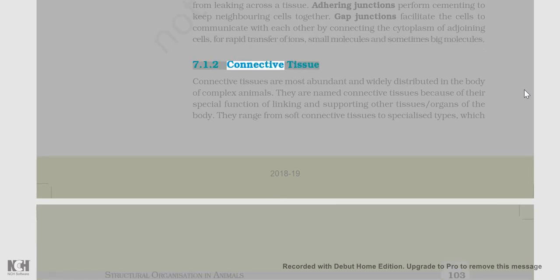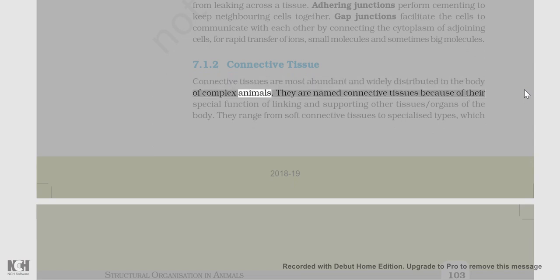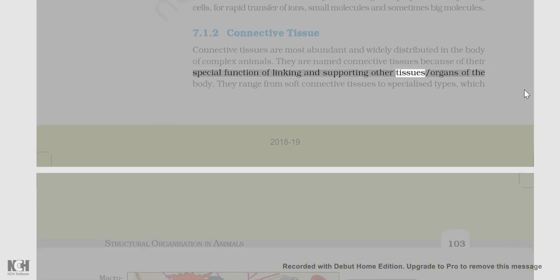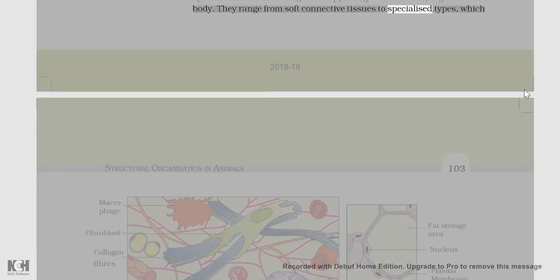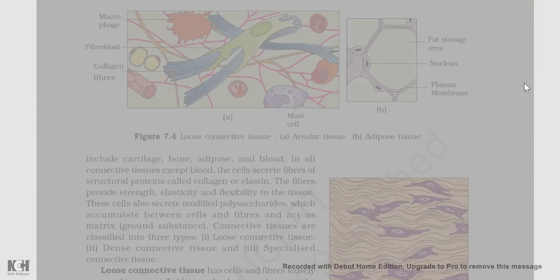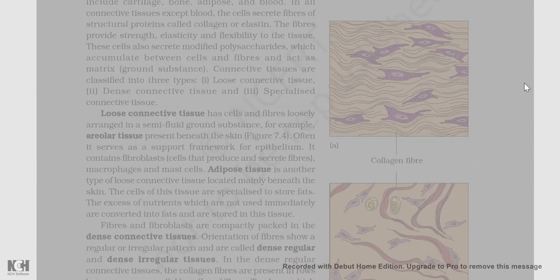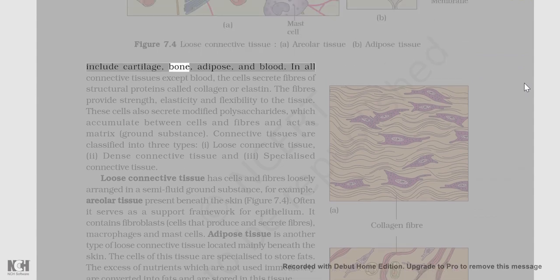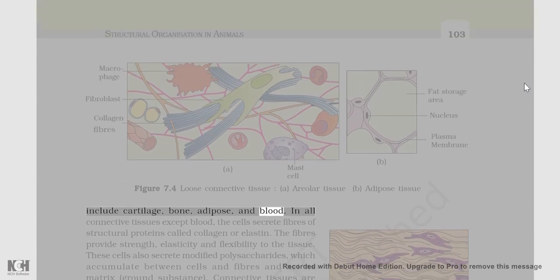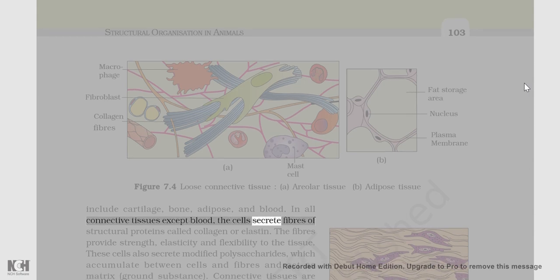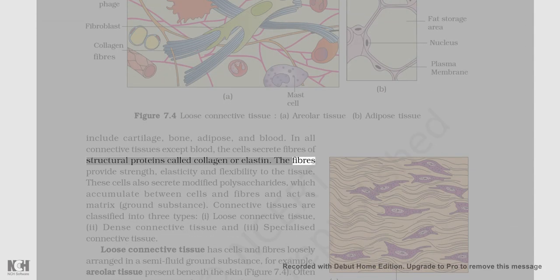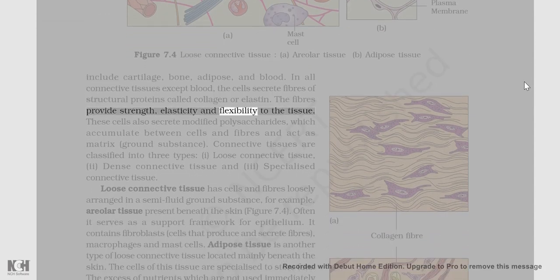Connective tissues are most abundant and widely distributed in the body of complex animals. They are named connective tissues because of their special function of linking and supporting other tissues and organs of the body. They range from soft connective tissues to specialized types which include cartilage, bone, adipose, and blood. In all connective tissues except blood, the cells secrete fibers of structural proteins called collagen or elastin. The fibers provide strength, elasticity, and flexibility to the tissue.